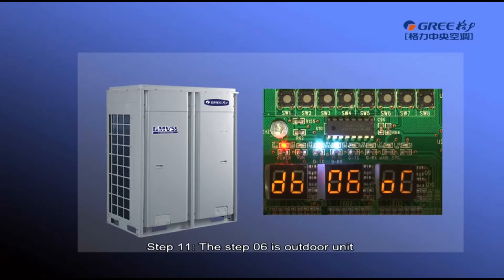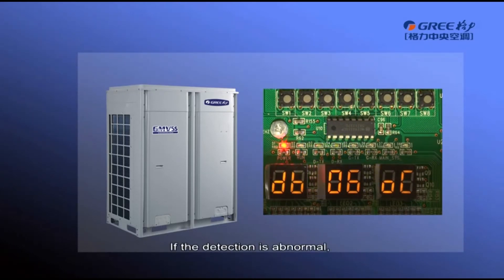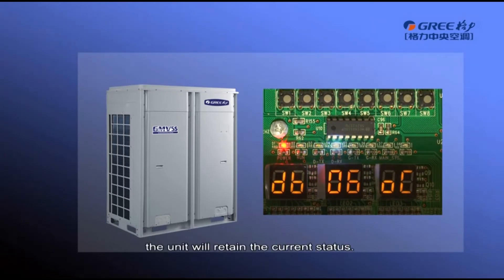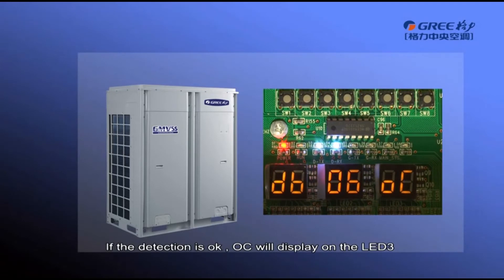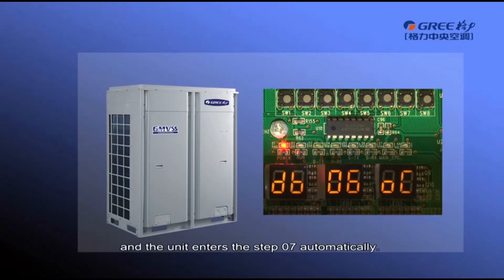Step 6 is outdoor unit electric component detection. If the detection is abnormal, the unit will retain the current status. If the detection is OK, OC will display on LED 3 and the unit enters Step 6 automatically.